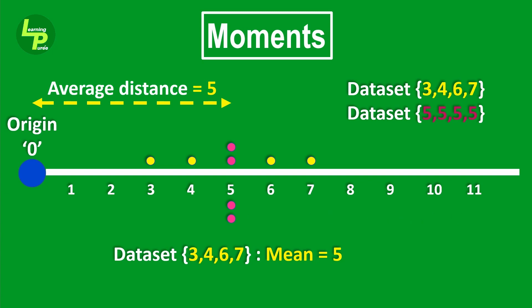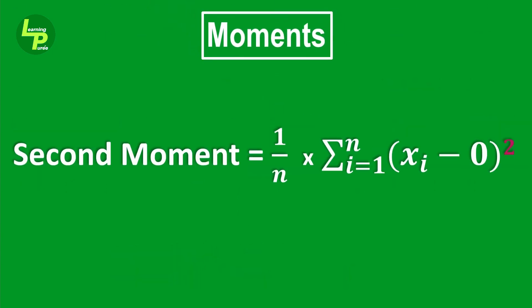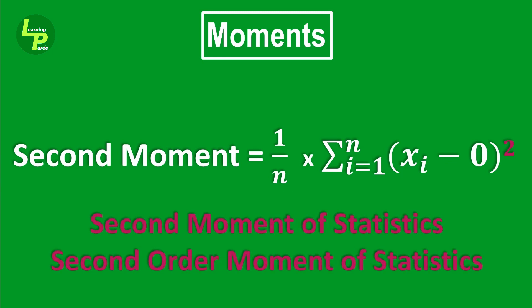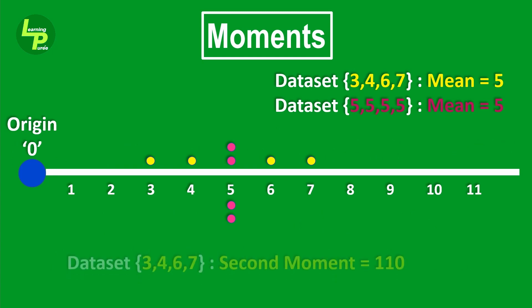How would you differentiate between these two data sets? Here is where we define the second moment or the second order moment of statistics. The second moment is defined as the average of the square of the distance of the data points from the origin.